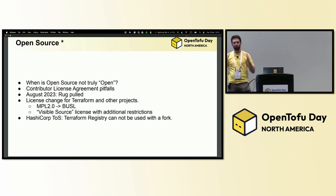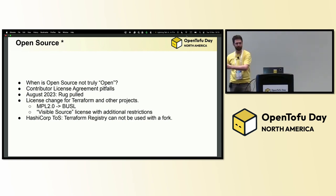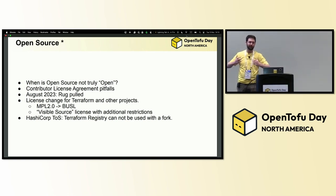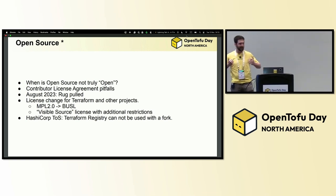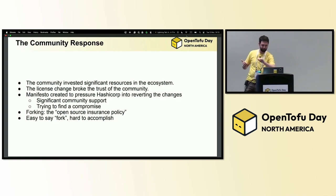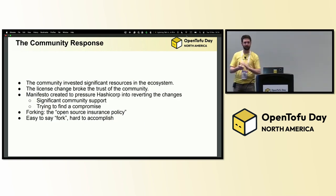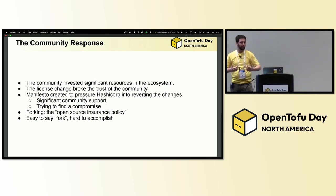You might have an open source tool, but to run it you might have this proprietary service that is theoretically freely licensed, but when there's a problem it is a single point of failure. To be able to fork and exercise your right as an open source developer — that's a big problem. So the rug was pulled out from the Terraform community and people were left in the lurch, scrambling — the license was changed, you can't use the registry for forks.